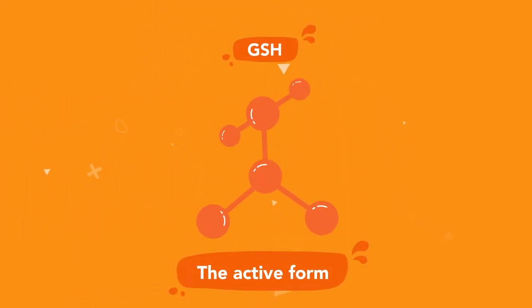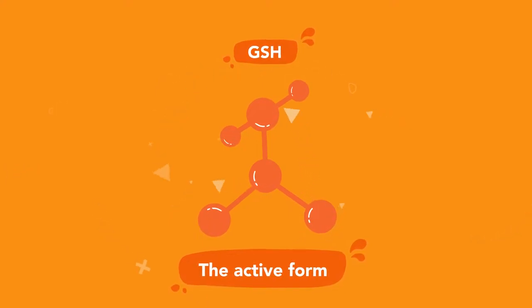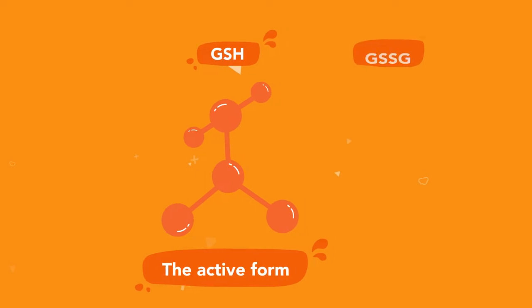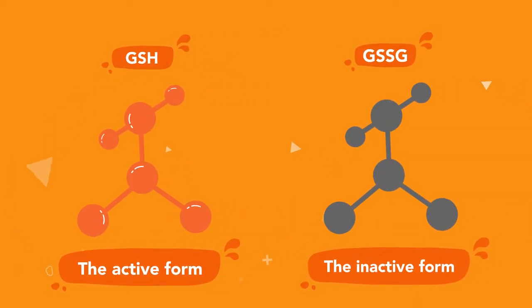There are two types of glutathione. One, reduced glutathione, GSH or L-glutathione, which is the active form. Two, oxidized glutathione, GSSG, the inactive form.